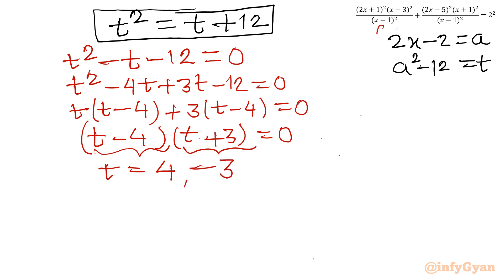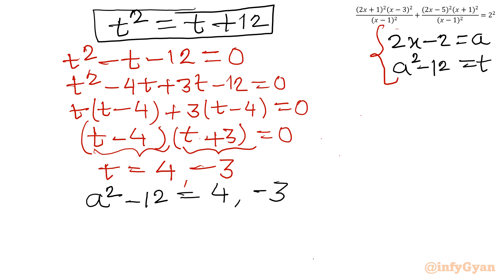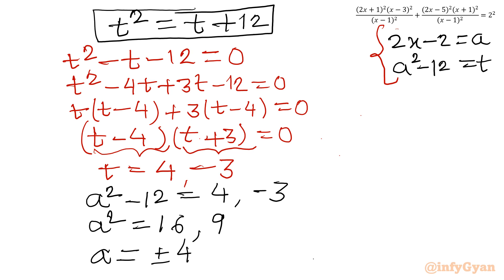Now substituting back t = a²-12: for t=4 we get a²-12=4, so a²=16, giving a = ±4. For t=-3 we get a²-12=-3, so a²=9, giving a = ±3.